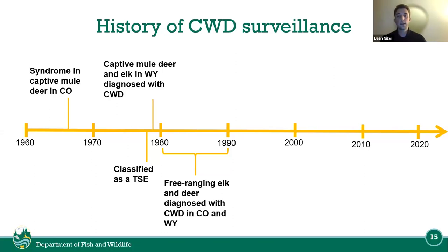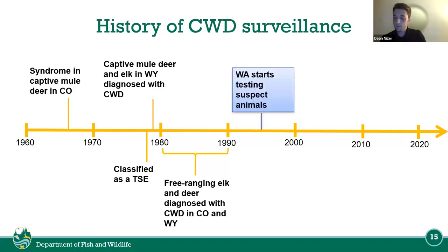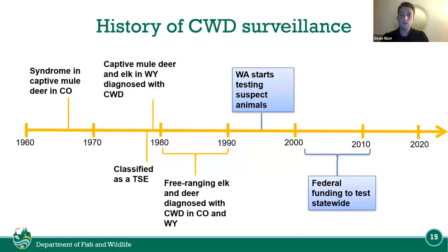From 1980 through 1990, free-ranging elk and deer were diagnosed with CWD in Colorado and Wyoming. Washington started testing suspected animals in the late 1990s, and from the early 2000s through 2010, federal funding to test statewide was available.